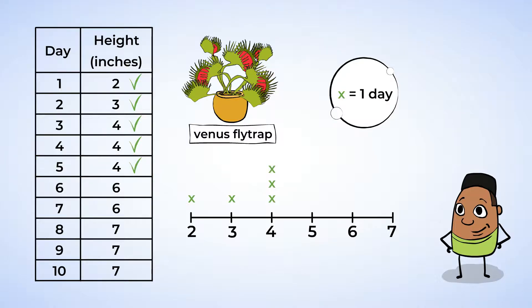You know, instead of going one row at a time, I have an idea that might be faster. I see that the next number of inches is 6. Why don't we count all the days with 6 inches, and then plot them all together? Let's see. Both day 6 and 7 are 6 inches. So, put 2 X's above 6. Do the same thing with 7 inches. Day 8, 9, and 10 all have 7 inches. That is 3 days. Put 3 X's above 7 on the number line.